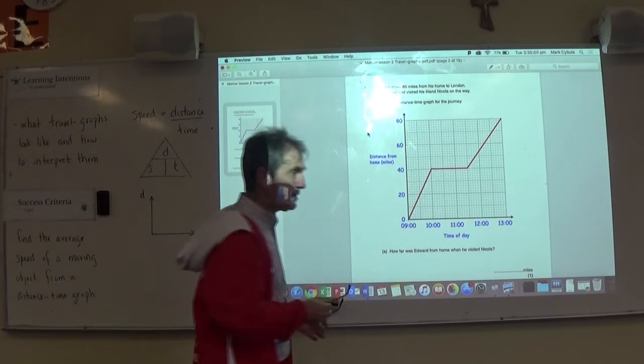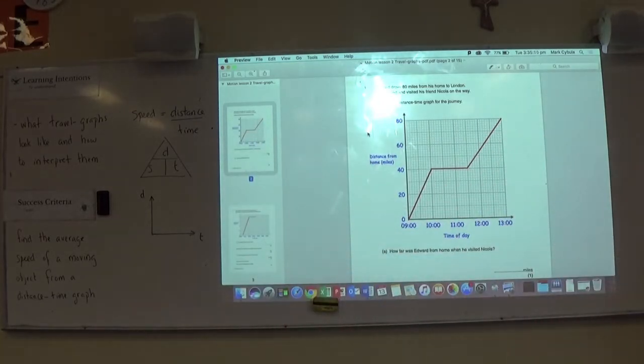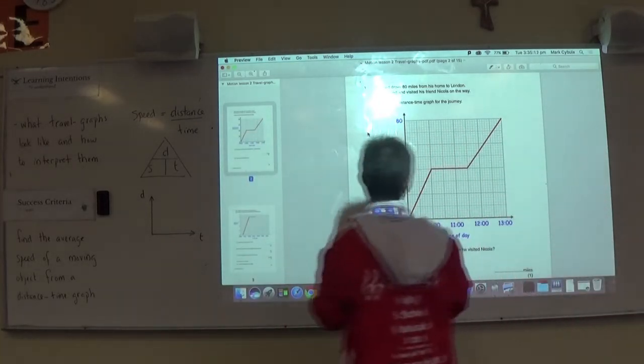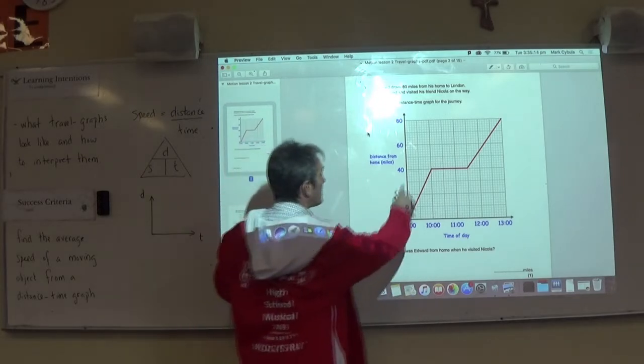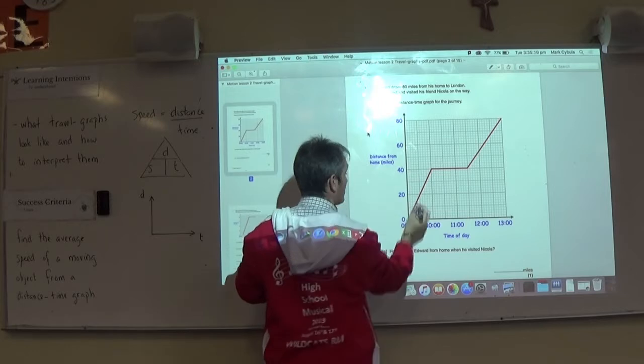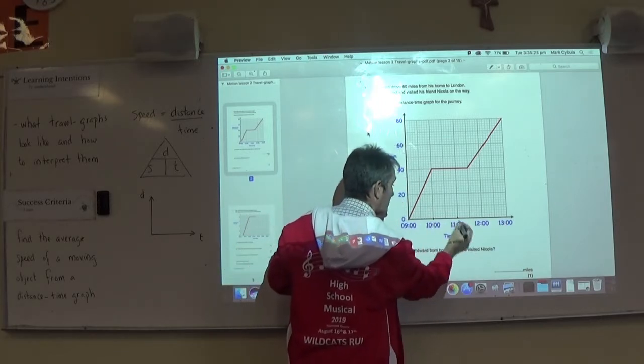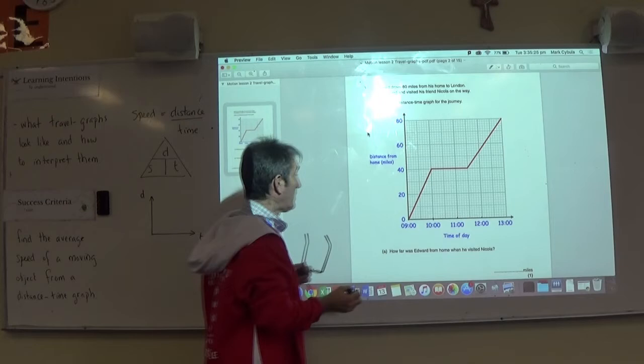To give you an example, we can use this as a picture to find the average speed taken by Ed as he drives home to London. This shows you clearly, from beginning to end, that he's traveled a total distance of 80 miles. It's taken a period of time of four hours. And I can read off this timeline here.